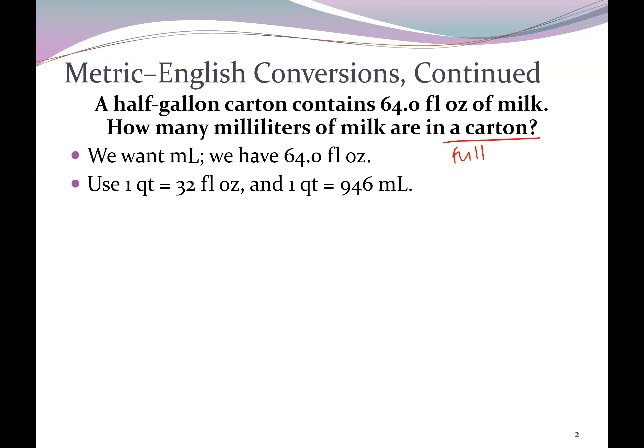So a half-gallon carton contains 64 fluid ounces, and they want a full carton. So we need to get to a whole carton from a half a carton. We're going to multiply 64 times 2 in our calculators, and we get 128 fluid ounces.